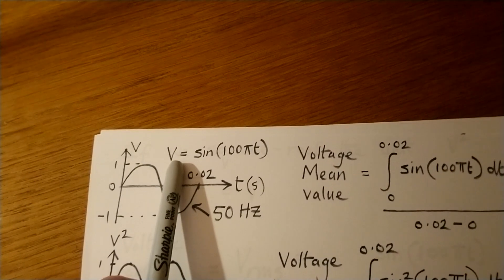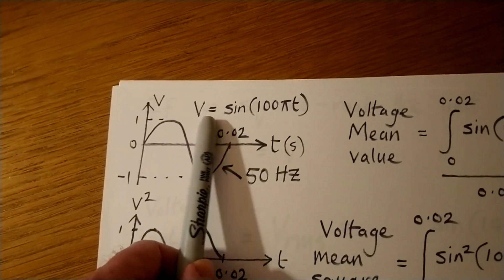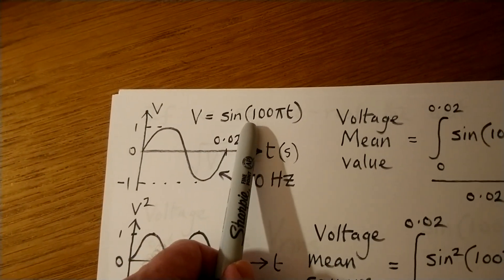So in this case, the equation of the graph is V is equal to sine of 100 pi T.